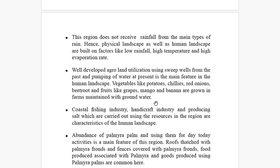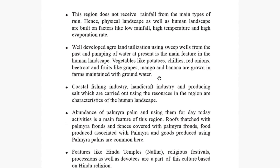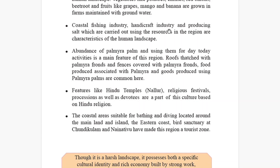Coastal fishing industry, handicraft, and groundwater — which are carried out using resources in the region — are characteristics of the human landscape. Especially in the coastal area, the fishing industry and salt production are abundantly seen, as well as the handicraft industry.